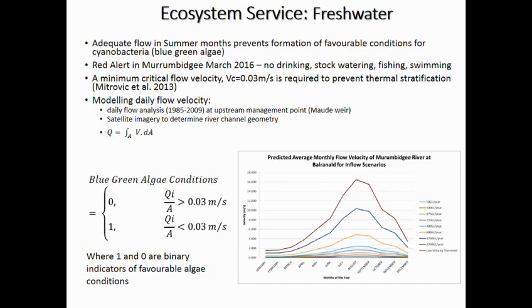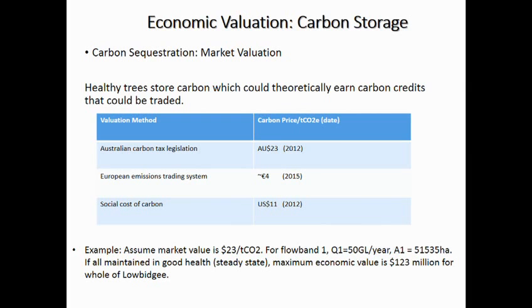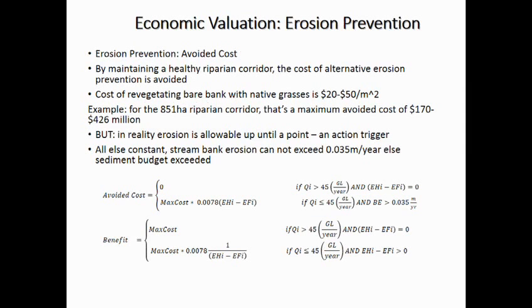Now we have the fun task of trying to value these services. Thankfully, with carbon that's quite an easy task — it's traded on the market in some places around the world. We used $23, which was the announced price for the carbon tax legislation in 2012. This gives us a neat way to say: if we know how much a river red gum is inundated and how much it stores when healthy, multiplied by our value, we get a rough but approximate value of what that floodplain is worth in dollar values. We can do something similar with erosion prevention.